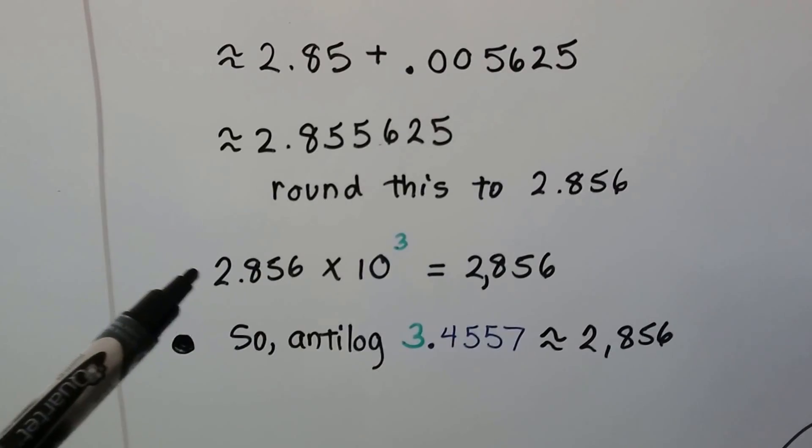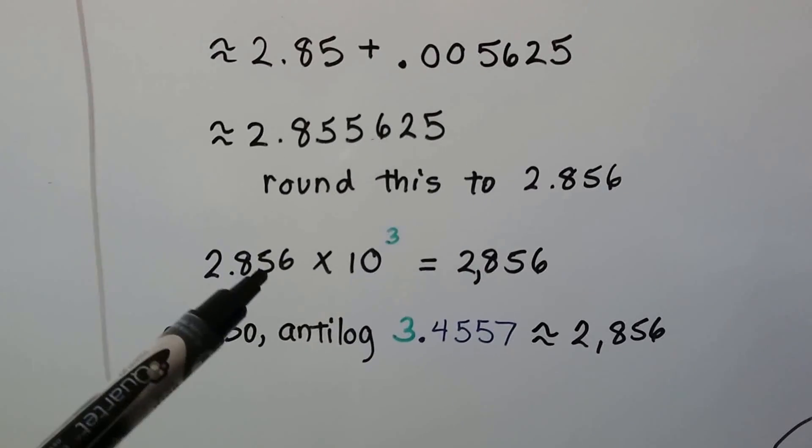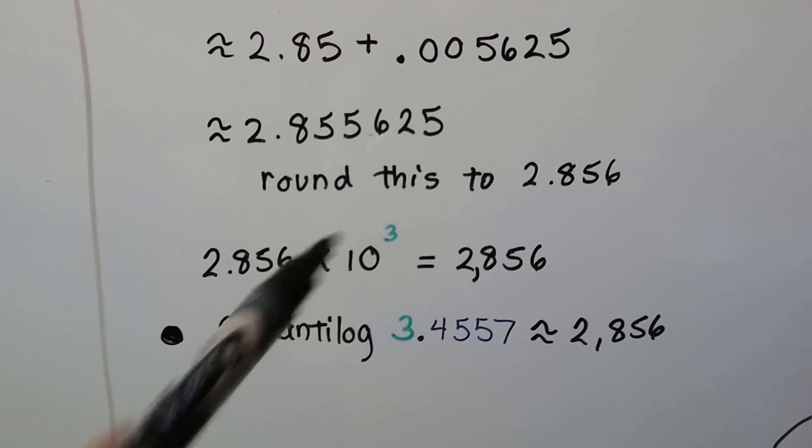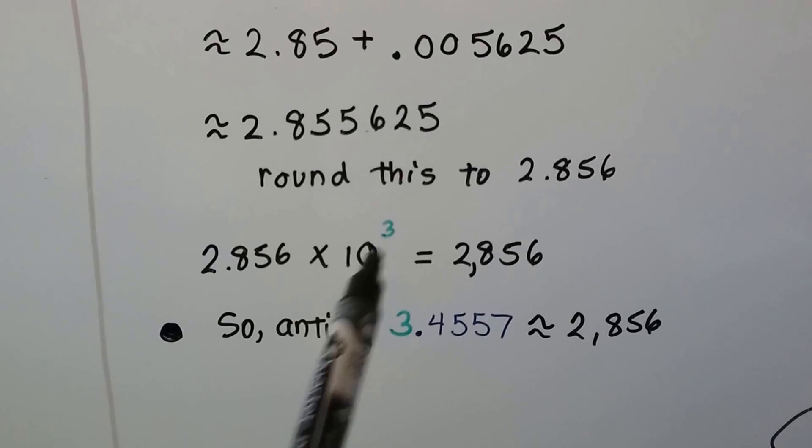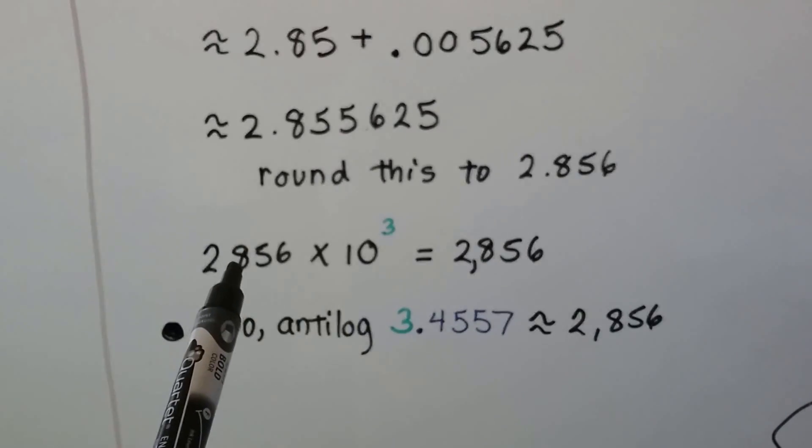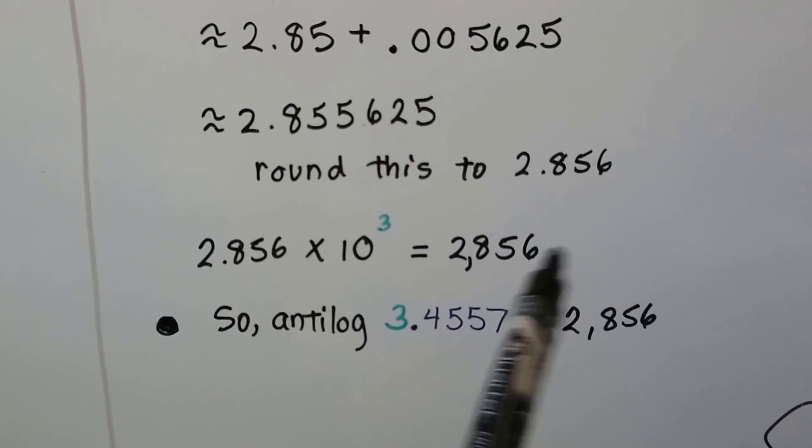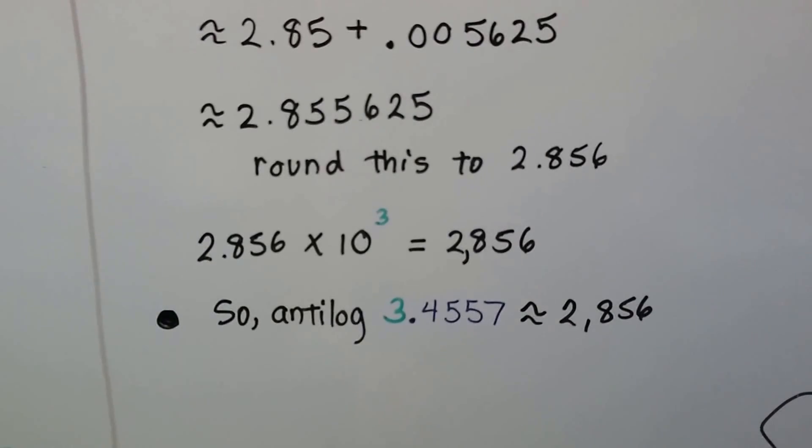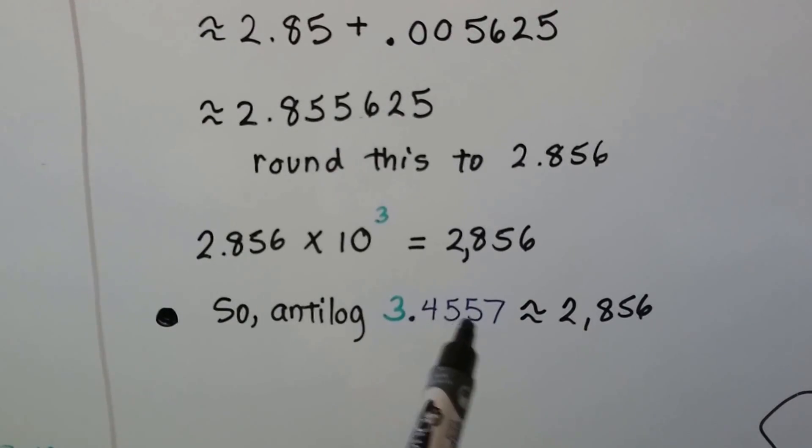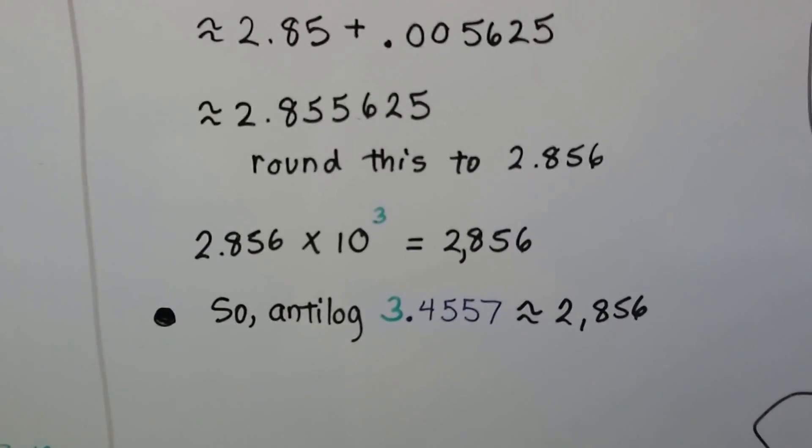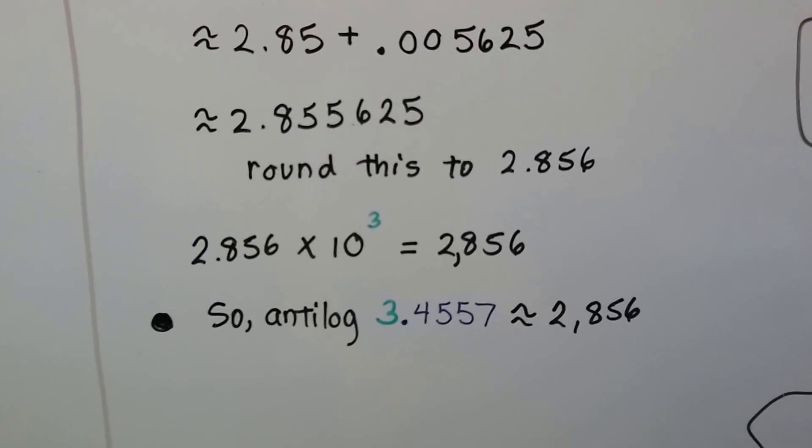Now, writing it in scientific notation, we have 2.856 times 10 to the 3rd power, which, when we move this and remove the scientific notation, we move that decimal point back, we get 2,856. So, anti-log 3.4557 is approximately 2,856.